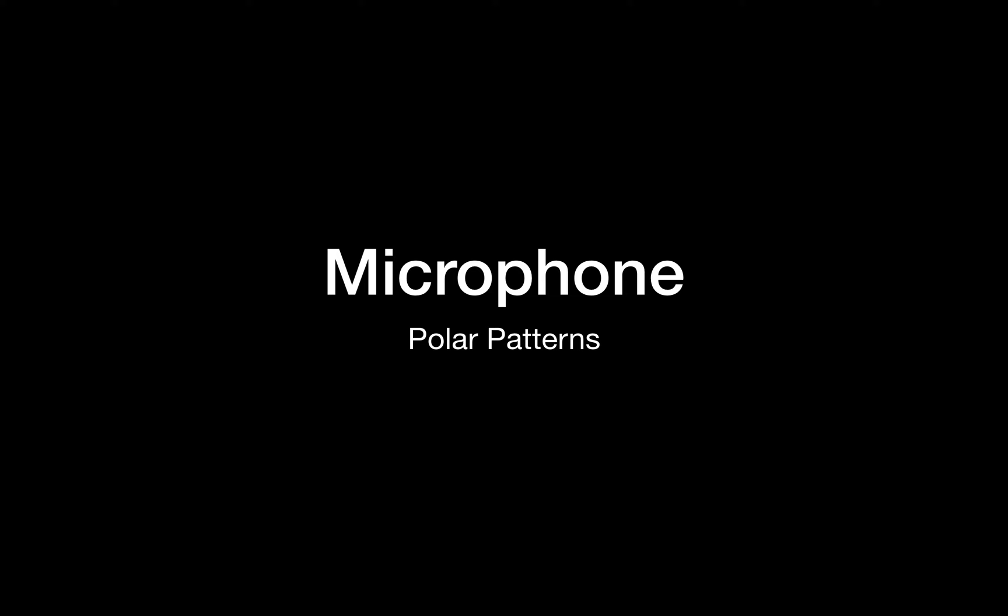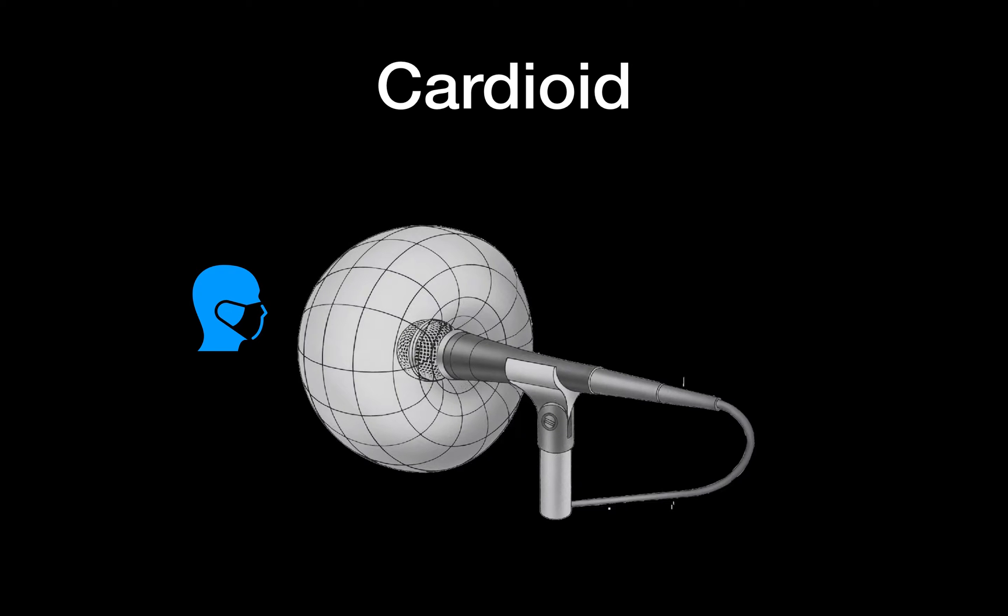A polar pattern talks about the direction that the microphone is effective at converting sound pressure. So the first polar pattern I'm going to talk about is called cardioid, and it's what is in most dynamic microphones like an SM57, SM58, I5, D6.